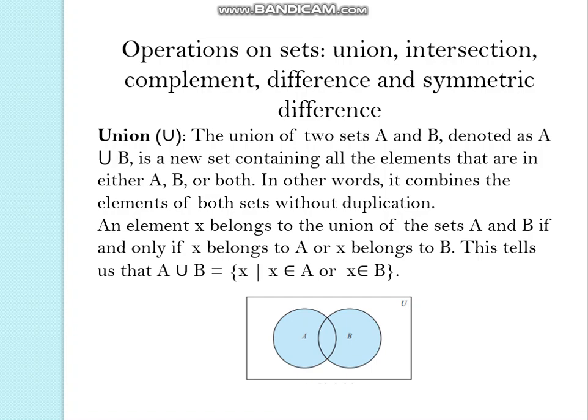A union B can be represented in the curly bracket X such that X belongs to A or X belongs to B. The Venn diagram is given where the shaded part is the union of the two sets where we have considered all the elements in A, in the set B and in common.